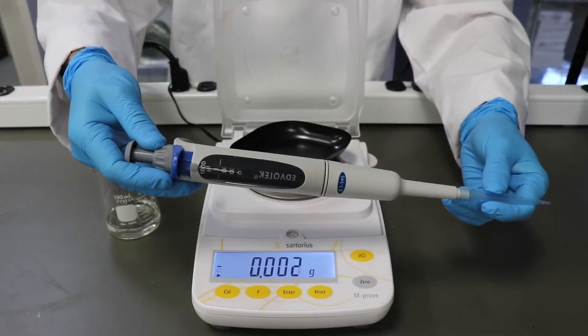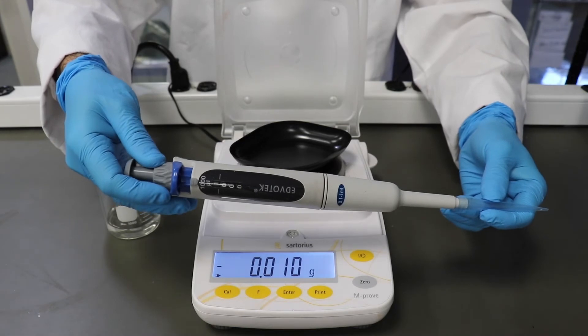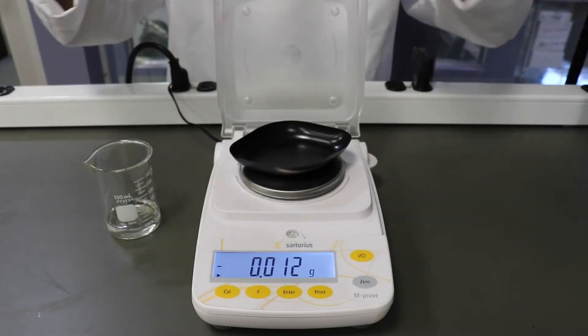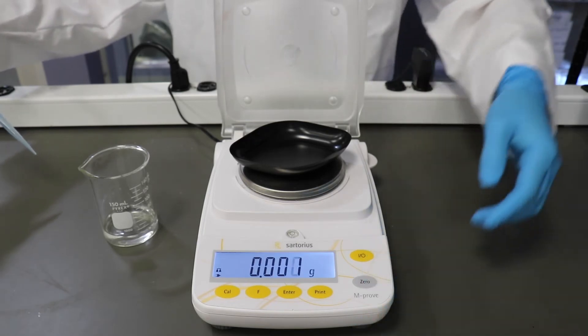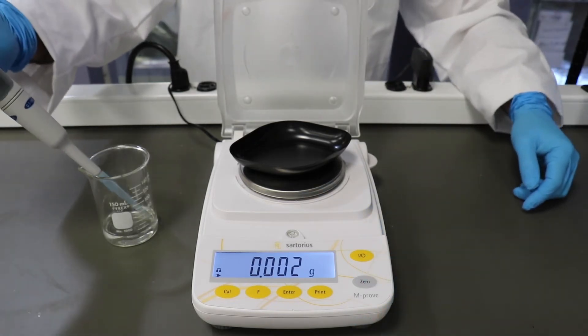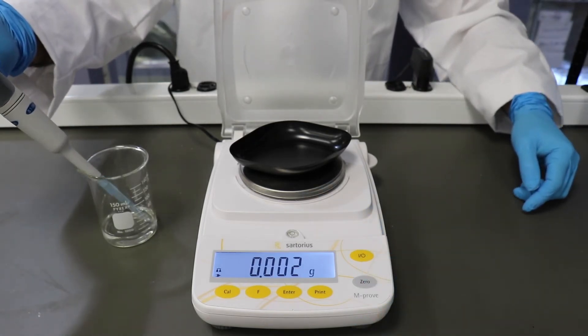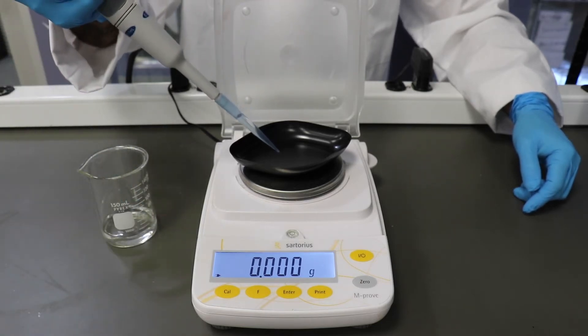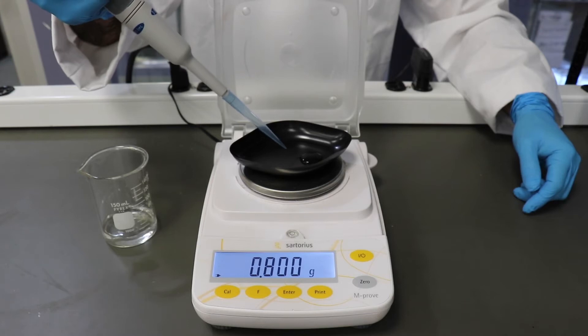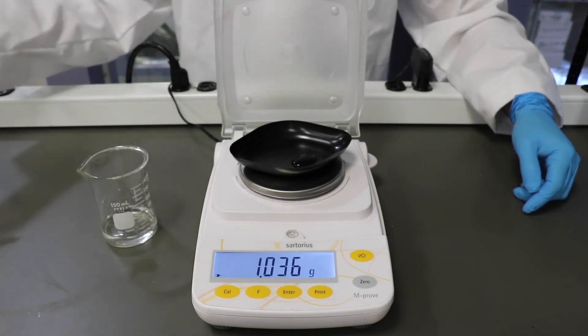Set the micropipet to its maximum value. Remember, one milliliter of water is equal to one gram. Dispense the known value of water into a tared weigh boat on the balance. If the mass of the liquid is higher or lower than the volume set on the pipet, then your pipet needs some adjusting.